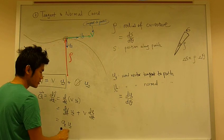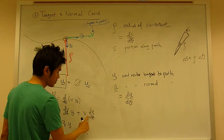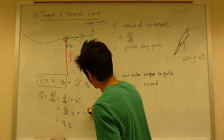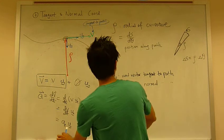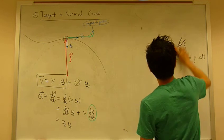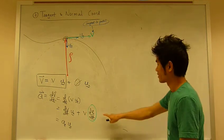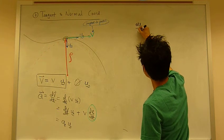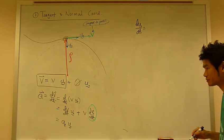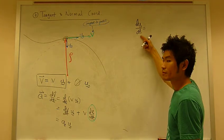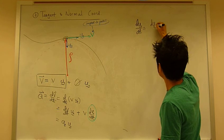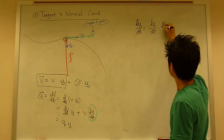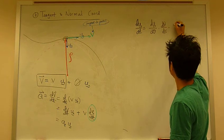Now, this is already in the ut direction. But this, we need to do something. We don't know what direction that is. So let's do something about this. dut/dt - you can do some mathematical trick, like here: dut/d theta times d theta/ds times ds/dt.